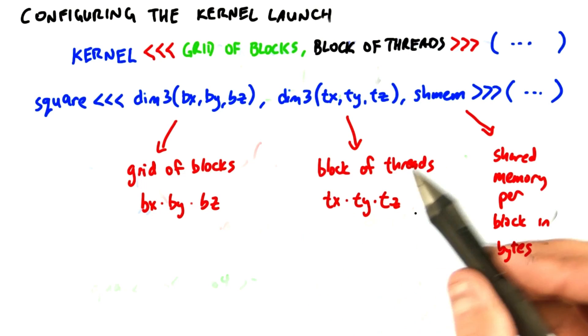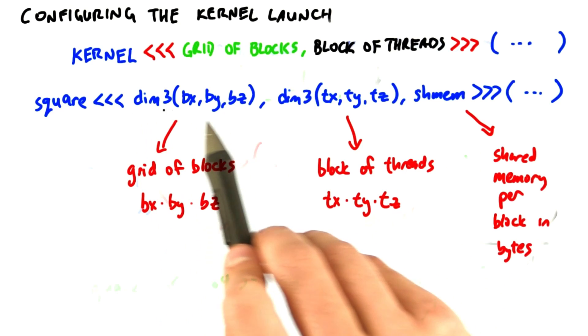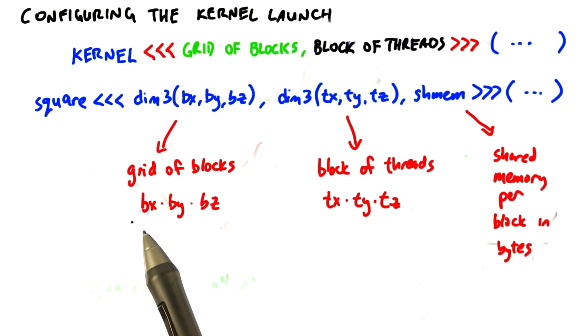The most general kernel launch we can do looks like this. Square of three parameters. The first is the dimensionality of the grid of blocks, that has bx times by times bz blocks.